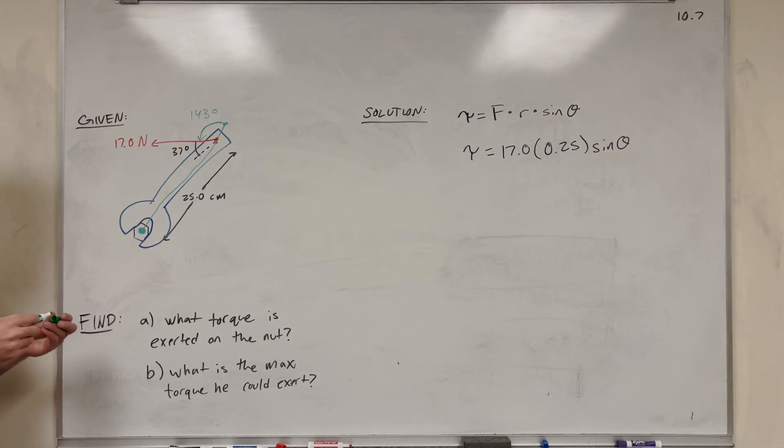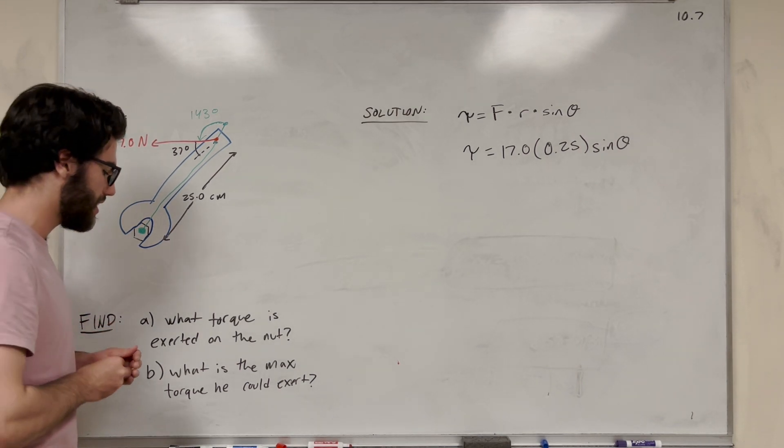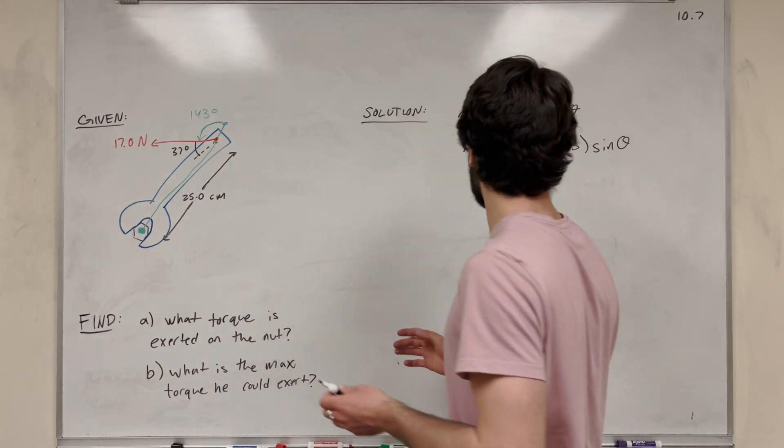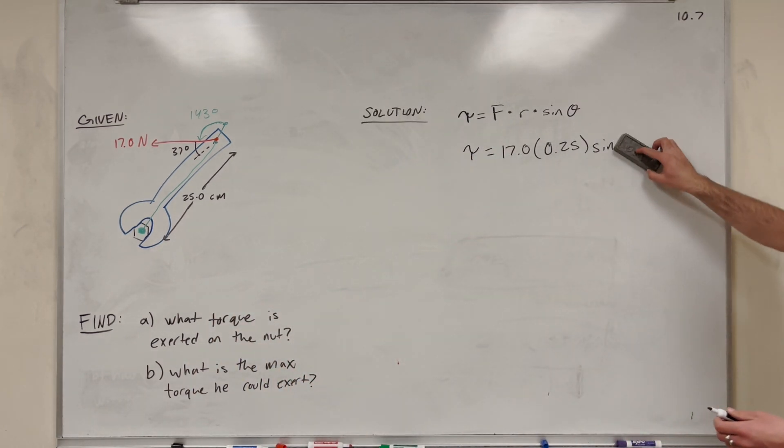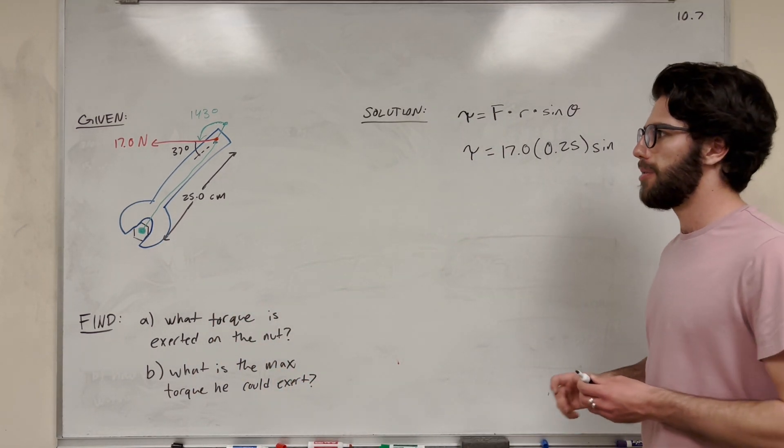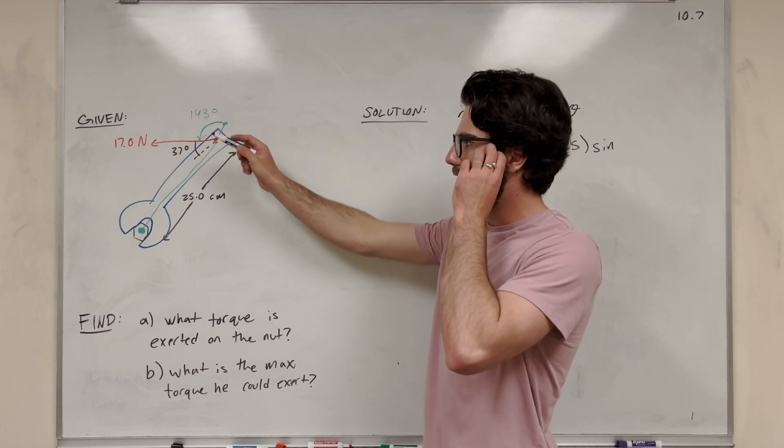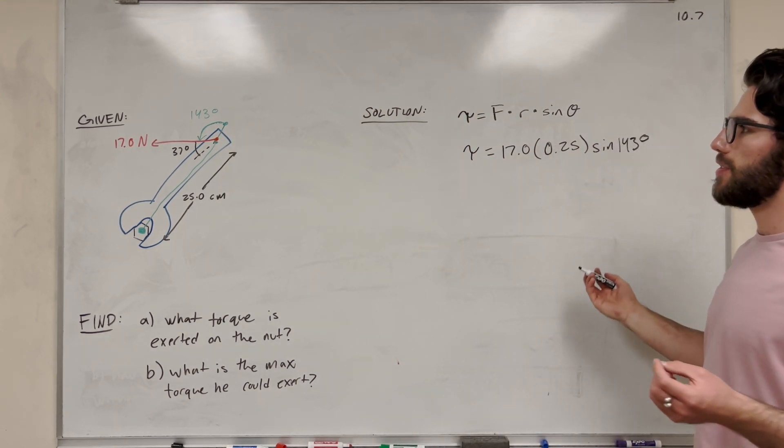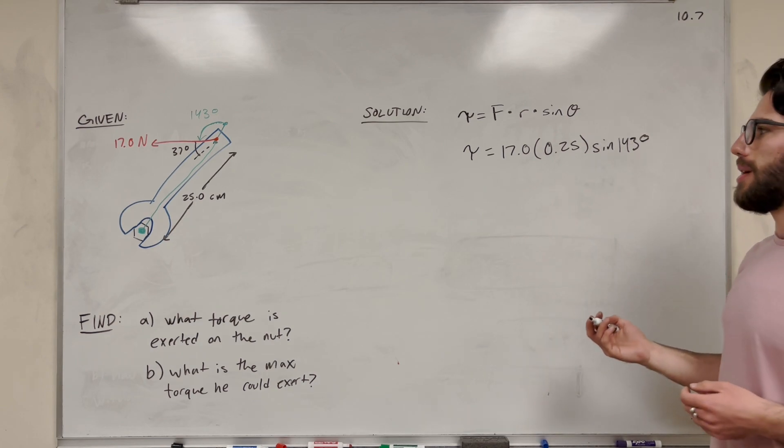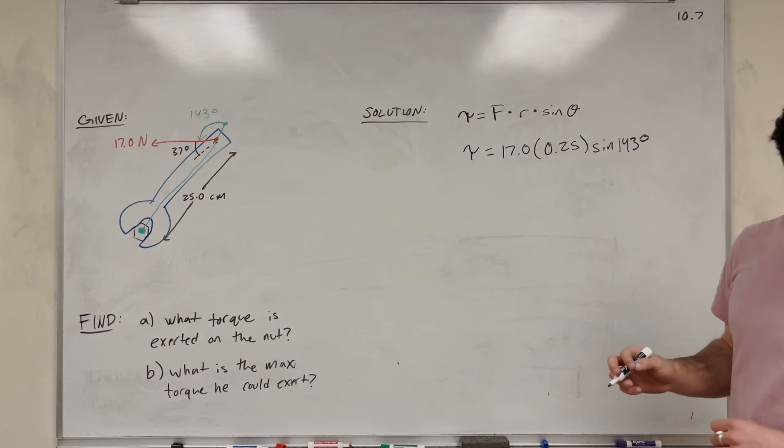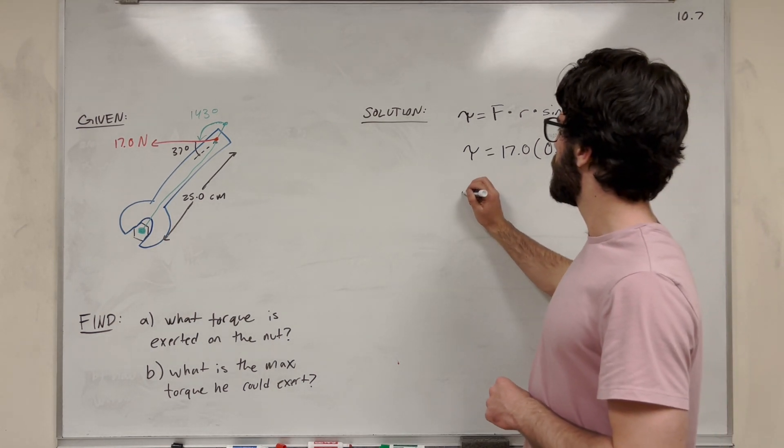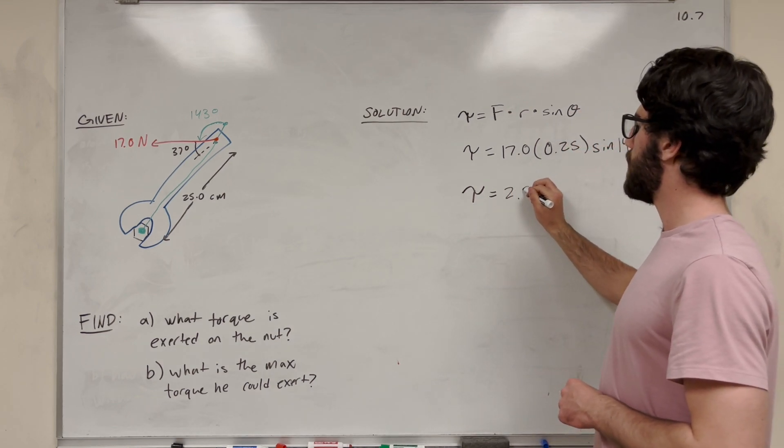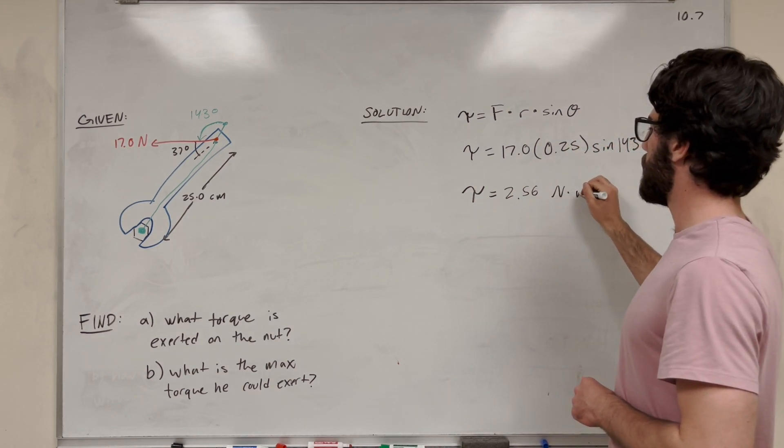So we're actually going to be using 143 degrees here. What would happen is we would do the exact same thing, so it doesn't make a difference. However, make sure that in the future you pay attention to that because it's going to make a difference in our later problems. So this is the method for finding that angle. I'm going to use 143 here. Because 143 and 37, they have the same value if you plug it into sine. So you solve this. The torque is equal to 2.56 newton meters. So this is the torque that he applies on the wrench.